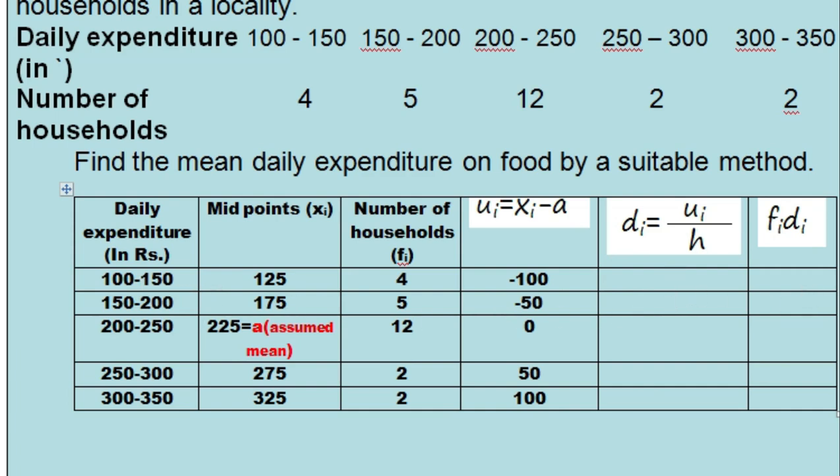So we can divide it by 50. This ui divided by 50 is equal to di. Minus 100 divided by 50 equals minus 2. Same for minus 50 divided by 50 equals minus 1. Then 0 divided by 50 will be 0, then 1, then 2. Now you can see we can multiply fi*di orally without using pen and paper.